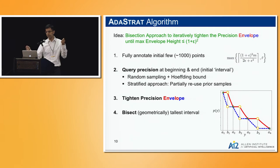Then we query the beginning and the end. For these queries, we can use simply random sampling and some Hoeffding bound-like inequality to get guaranteed bounds. We can actually do something a little bit better with stratified sampling and reuse prior samples as well. Given these two points, we compute the precision, we create this envelope and tighten it accordingly.